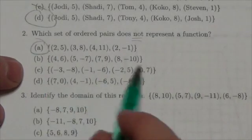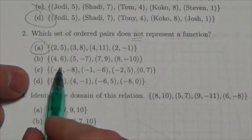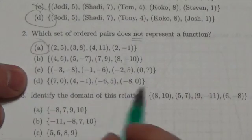But let's just be careful and go through the rest of them. So 4, 5, 7, 8—all different x-coordinates. Negative 3, negative 1, negative 2, 0—all different. 7, 4, negative 6, negative 8—all different.